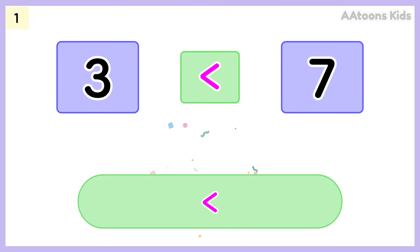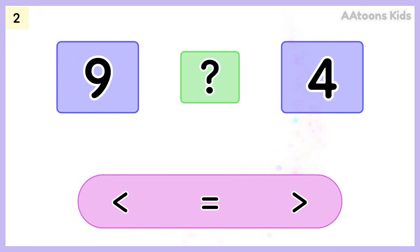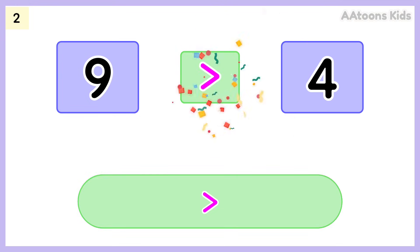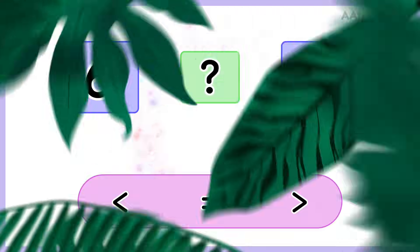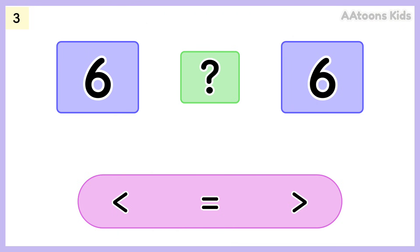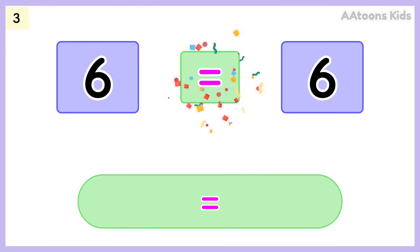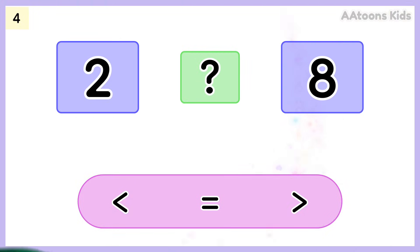Three is less than seven, so we use the less than symbol. Pick the correct symbol. Nine is greater than four, so we use the greater than symbol. Choose the correct symbol. Six is equal to six, so we use the equal to symbol. Pick the correct symbol.